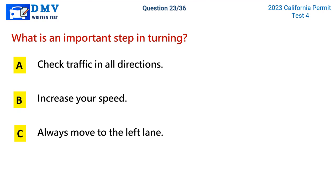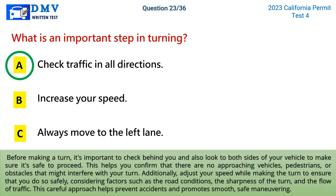Question 23: What is an important step in turning? A) check traffic in all directions, B) increase your speed, C) always move to the left lane. The correct answer is A. Before making a turn, check behind you and look to both sides to confirm it's safe to proceed. This helps confirm there are no approaching vehicles, pedestrians, or obstacles. Additionally, adjust your speed while making the turn, considering road conditions, the sharpness of the turn, and the flow of traffic.